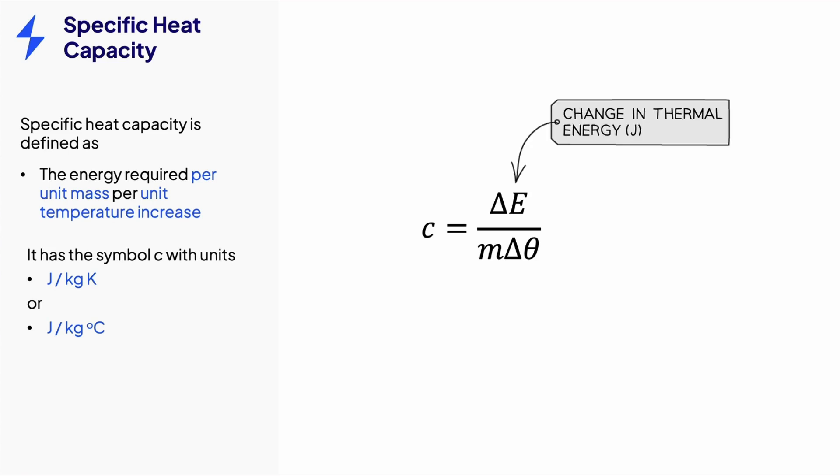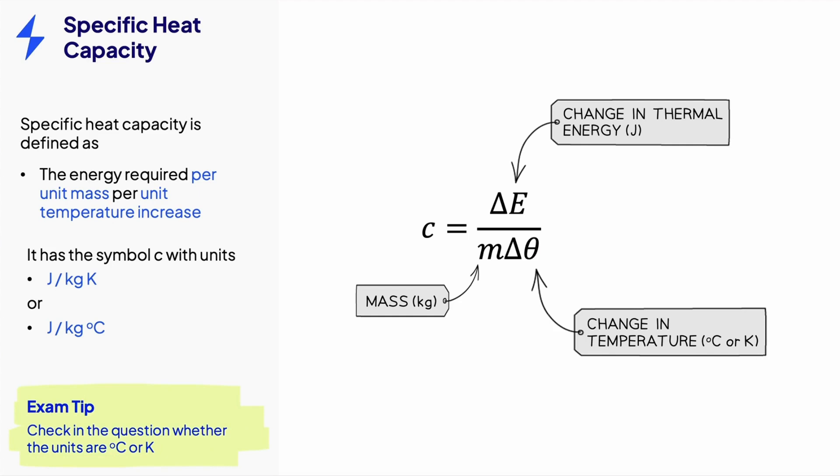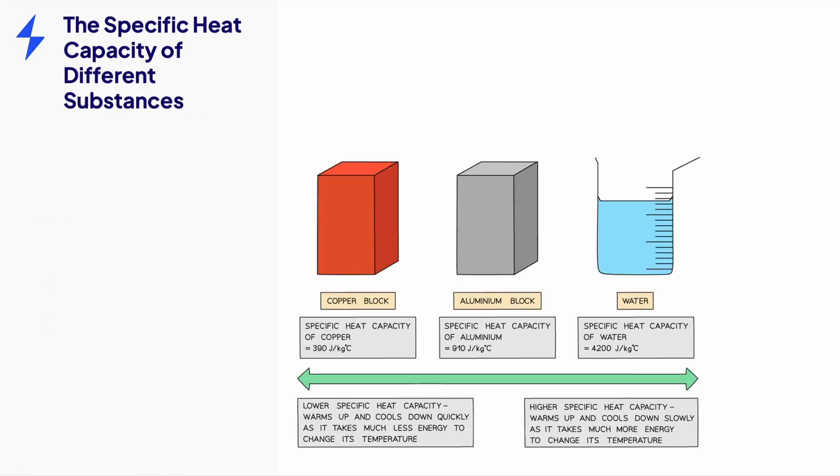Its equation is delta E, the change in thermal energy in joules, divided by m, the mass in kilograms, times delta theta, the change in temperature in degrees celsius or kelvin. Delta just means change, so it doesn't matter whether the temperature is given in celsius or kelvin, because the change in either of those scales is the same. To know which unit to use, look at what units the temperature has been given in the question.